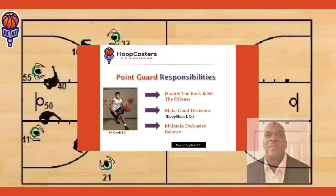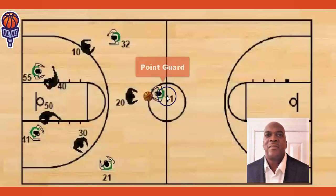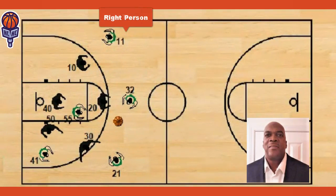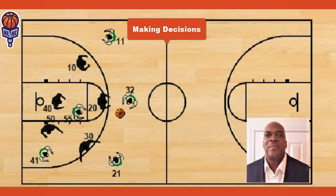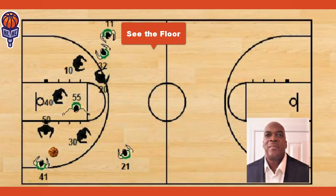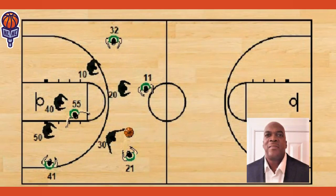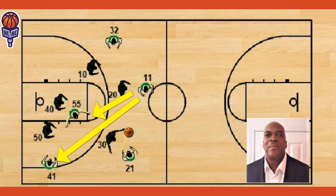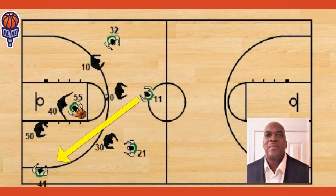Now let's talk about making good decisions with the ball. The point guard's responsibility is to get the ball to the right person in the right spots at the right time. In this offensive set, the point guard is already thinking and making decisions — where is the good pass going to be after he receives the ball? He has to see the entire floor, see all of his players, and understand their strengths and weaknesses. Here he's about to get the ball; he sees number 55 in the paint is open, and he sees 41 is open out in the corner.